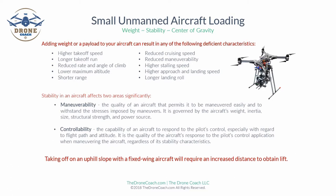Stability in an aircraft significantly affects two areas: maneuverability and controlability. Maneuverability is the quality of an aircraft that permits it to be maneuvered easily and to withstand the stresses imposed by maneuvers — governed by the aircraft's weight, inertia, size, structural strength, and power source. Controlability is the capability of an aircraft to respond to the pilot's control, especially with regard to flight path and altitude, regardless of its stability characteristics.